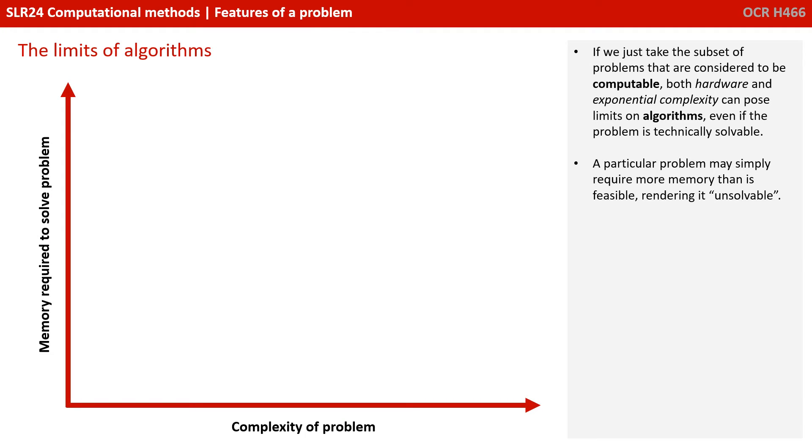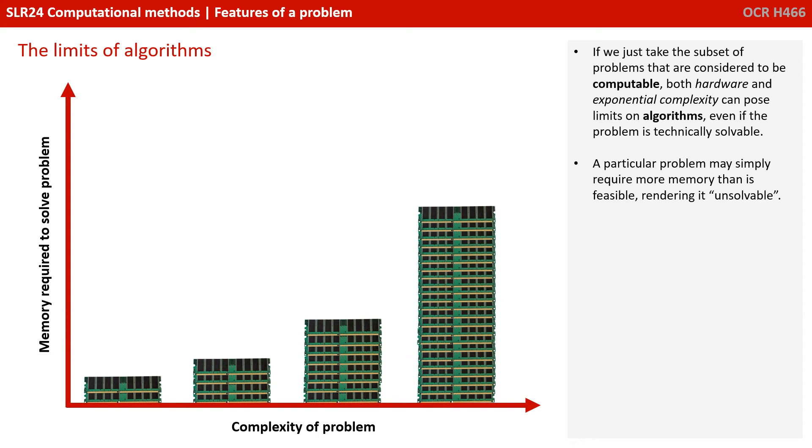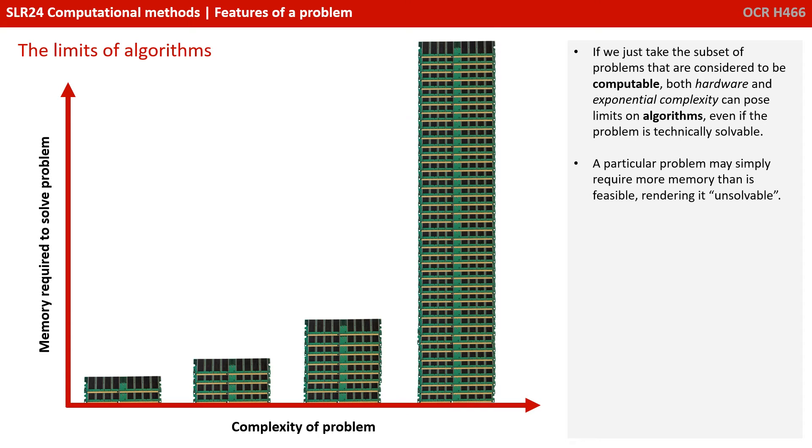If we just take the subset of problems that are considered computable, both hardware and exponential complexity can impose limits on algorithms, even if the problem is technically solvable. A particular problem may simply require more memory than is feasible, rendering it effectively unsolvable.